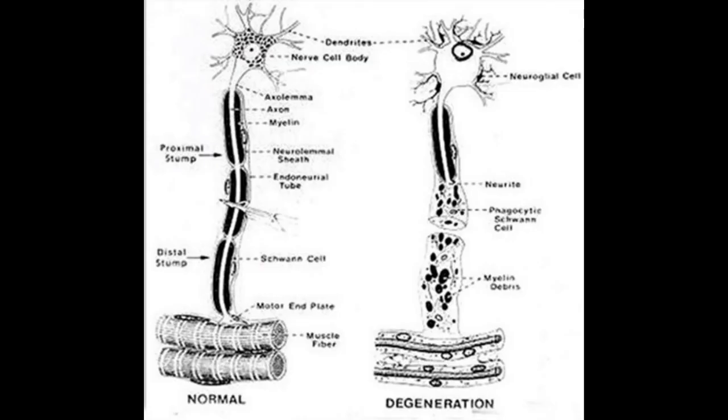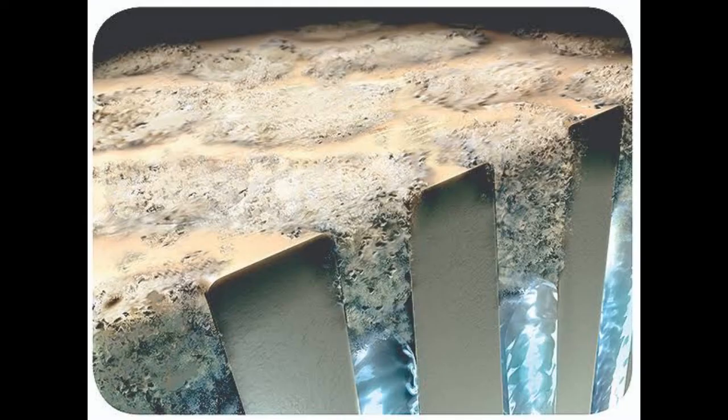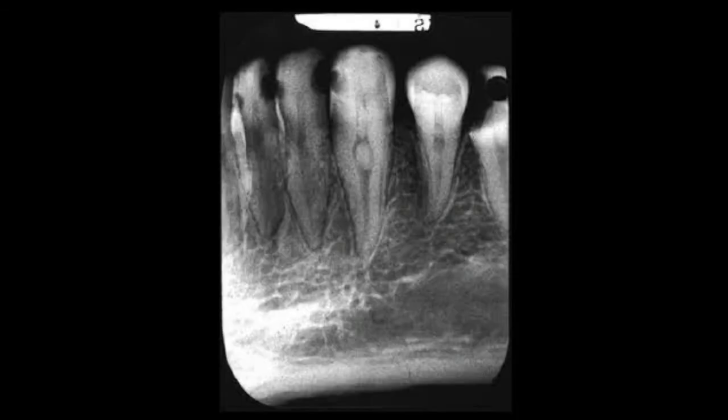Degeneration of myelinated and non-myelinated axons takes place, leading to decreased sensitivity in old people. Dystrophic calcifications may be seen in relation to the blood vessels or the collagen bundles. This is a kind of pathological calcification which commonly takes place in the root canals.